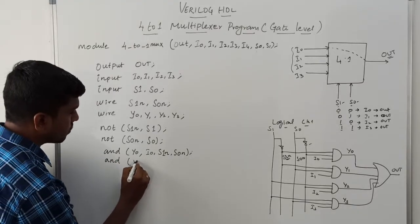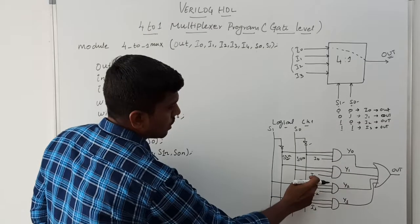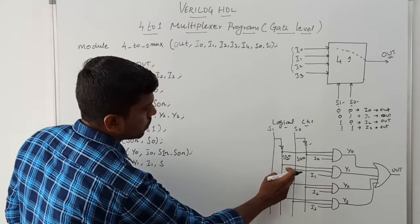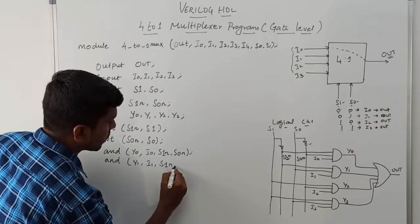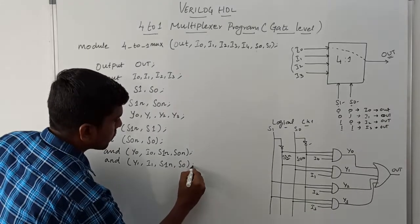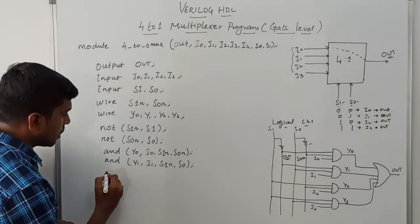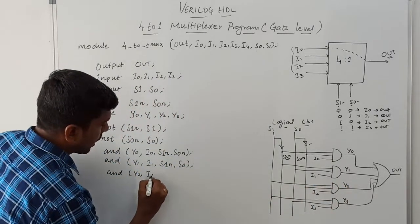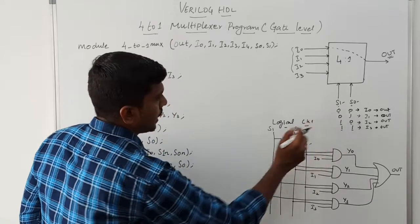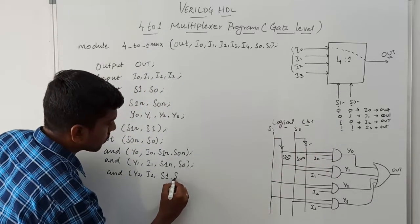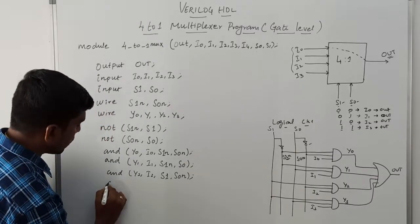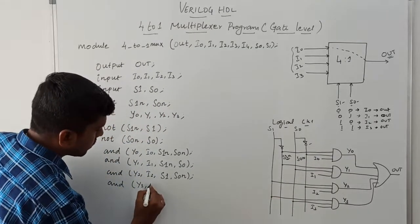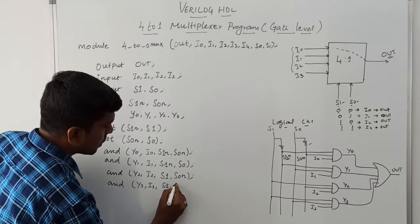The second AND gate: output is Y1, input is 'and(Y1, I1, S1_N, S0)' — S1 is 0 (complement), S0 is 1. Then the third AND gate: output is Y2, input is 'and(Y2, I2, S1, S0_N)' — S1=1, S0=0 (complement). Then the fourth AND gate: output is Y3, input is 'and(Y3, I3, S1, S0)' — both selection values are high.